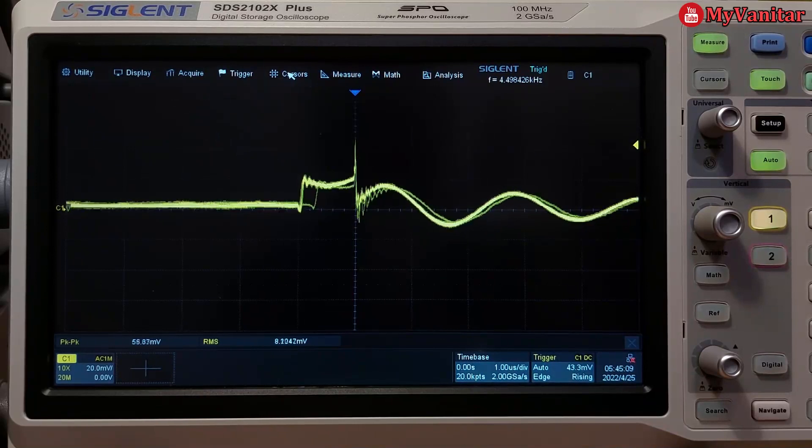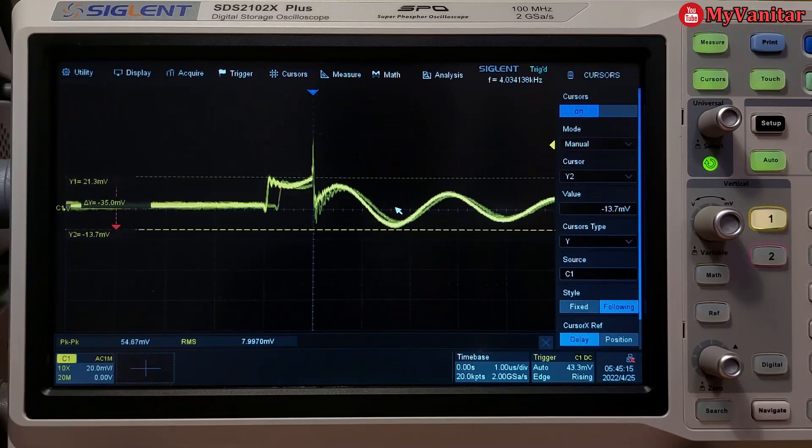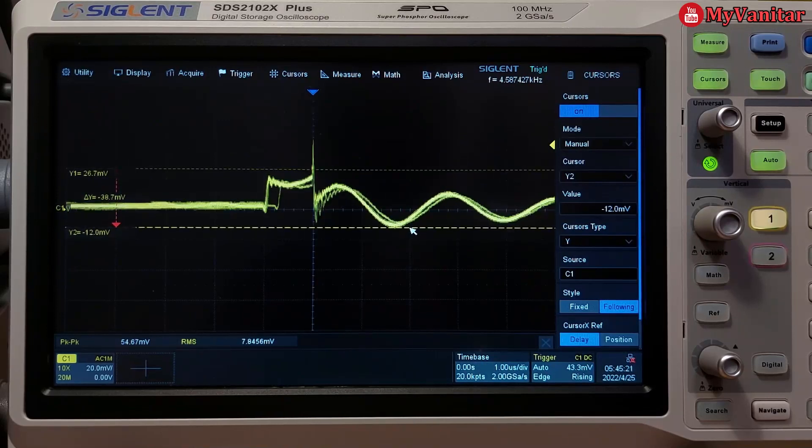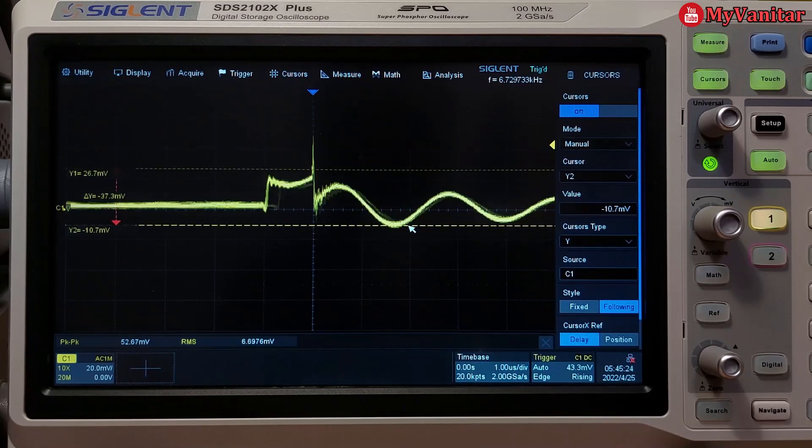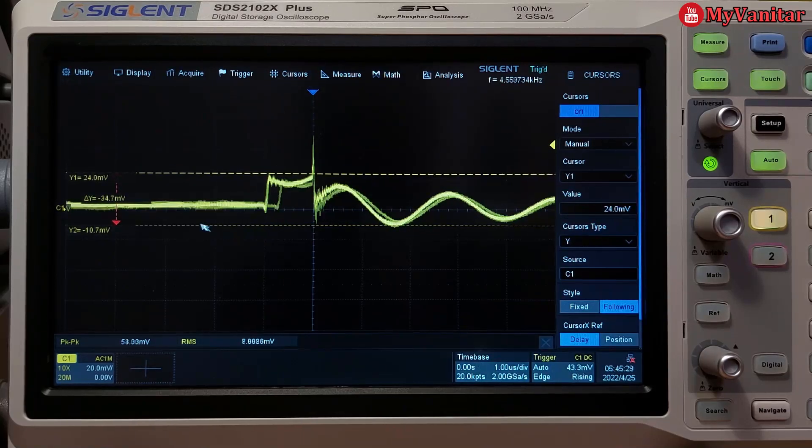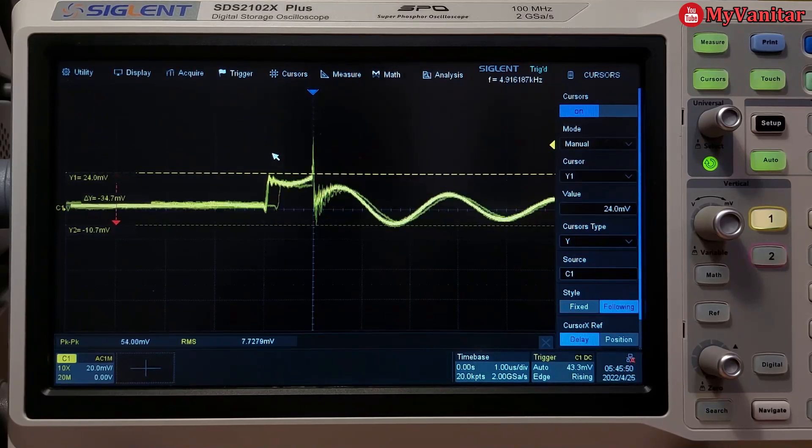So let's come here and enable the Y cursor. There we go. Should be from here to here. So delta Y is around 35 millivolts peak-to-peak. The maximum output noise for this power supply is 35 millivolts peak-to-peak at 150 milliamps, which is the maximum continuous current for this power supply.